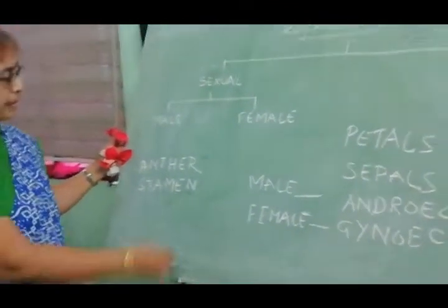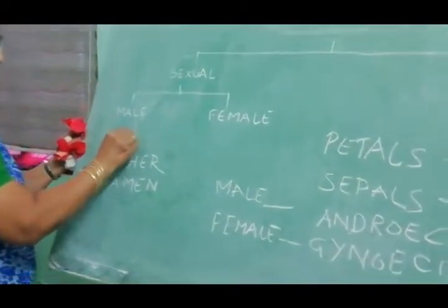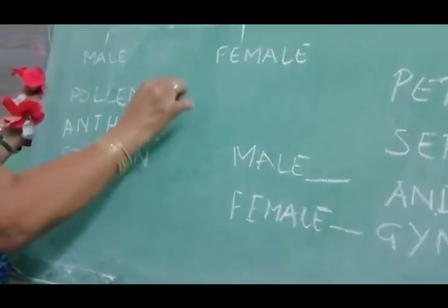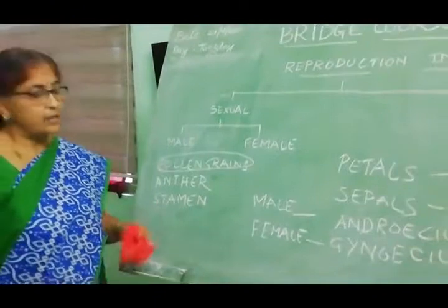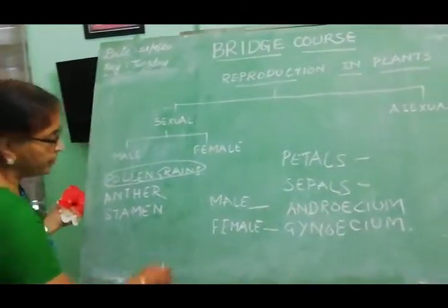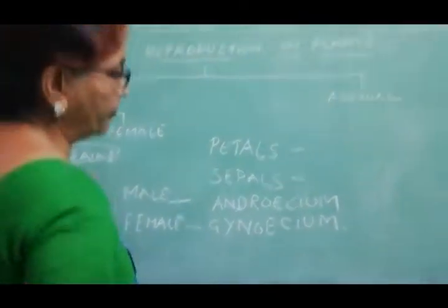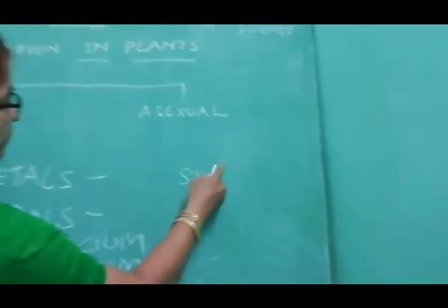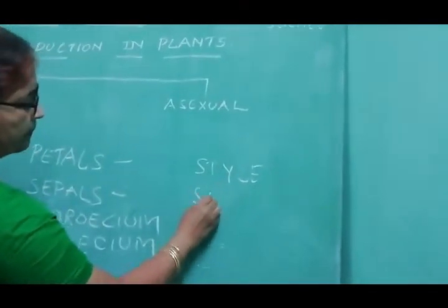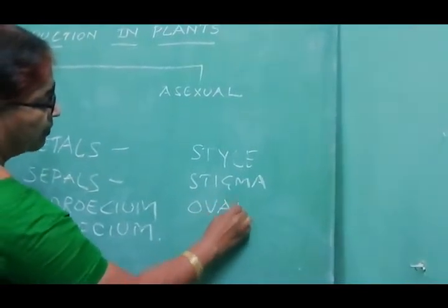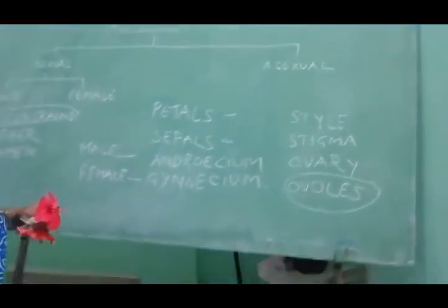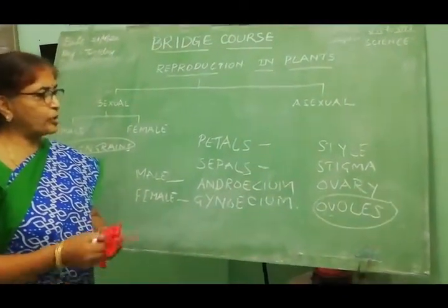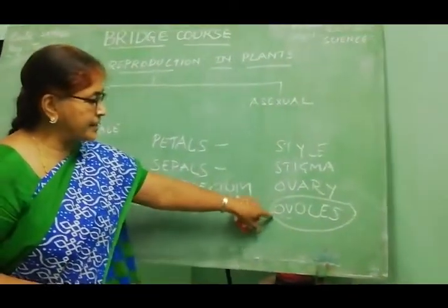The anther and stamen are the male parts. Over the anther we can find the pollen grains. These pollen grains are the male gametes in the reproduction of plants. These male gametes fuse with the female gametes, which are the ovules. The female parts are the style, stigma, ovary, and the ovules. These ovules are the female gametes, and they are present inside the ovary at the base of the flower.